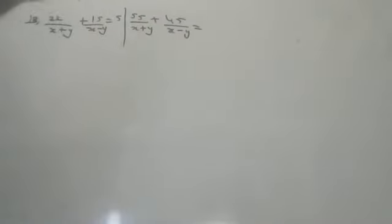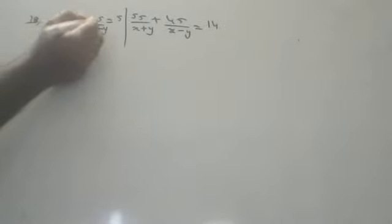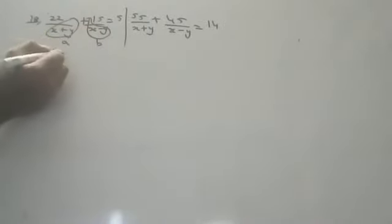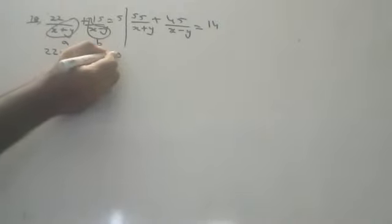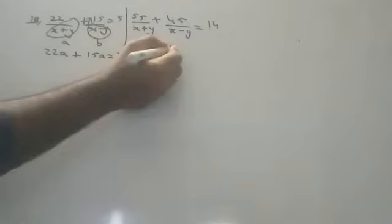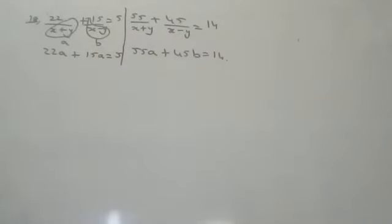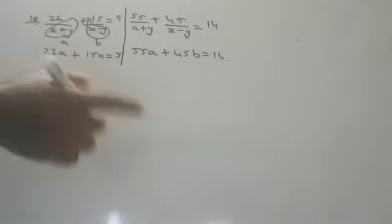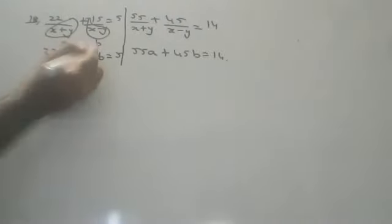Question 18: 22/(x+y) + 15/(x-y) = 5 and 55/(x+y) + 45/(x-y) = 14. Let 1/(x+y) = a and 1/(x-y) = b. The equations become: 22a + 15b = 5 and 55a + 45b = 14.